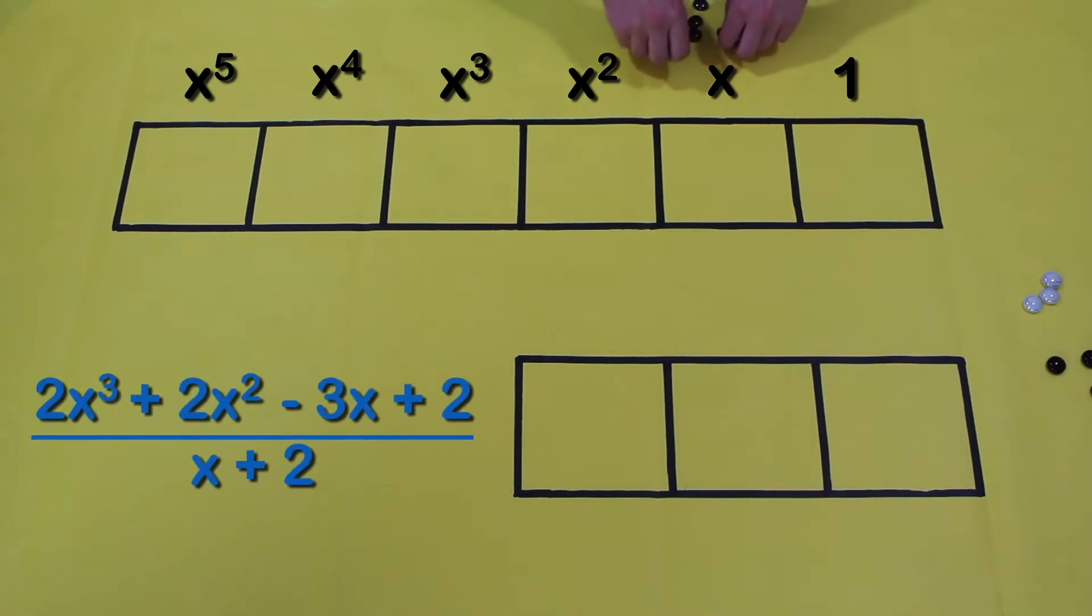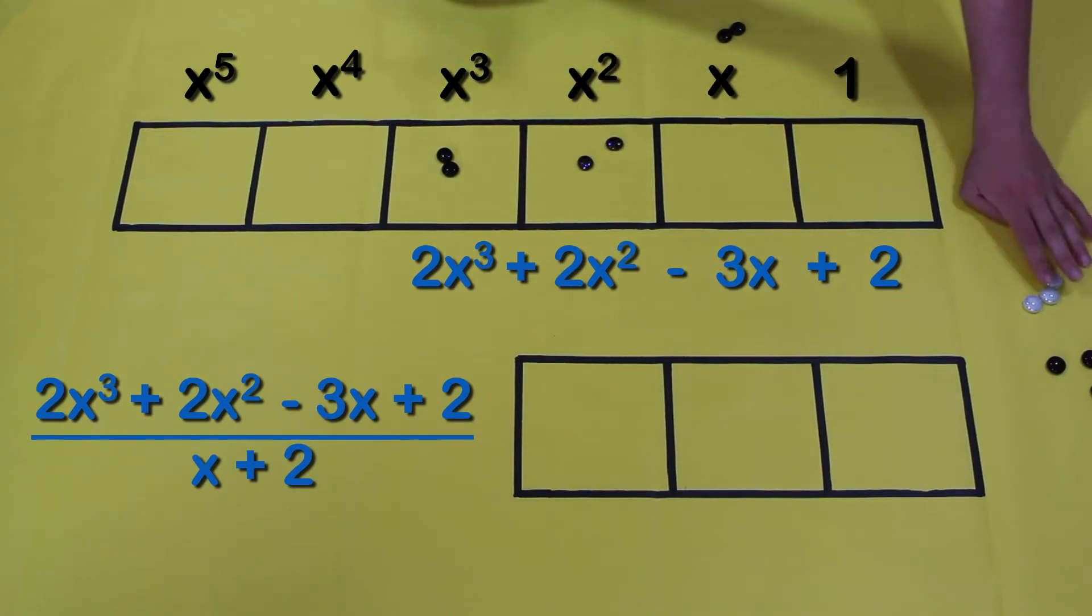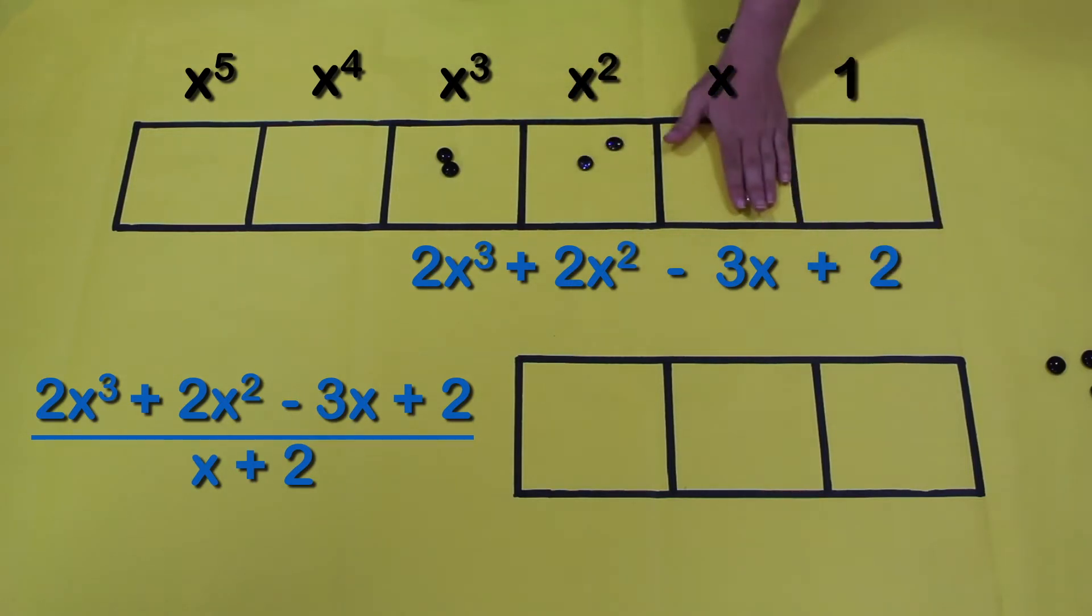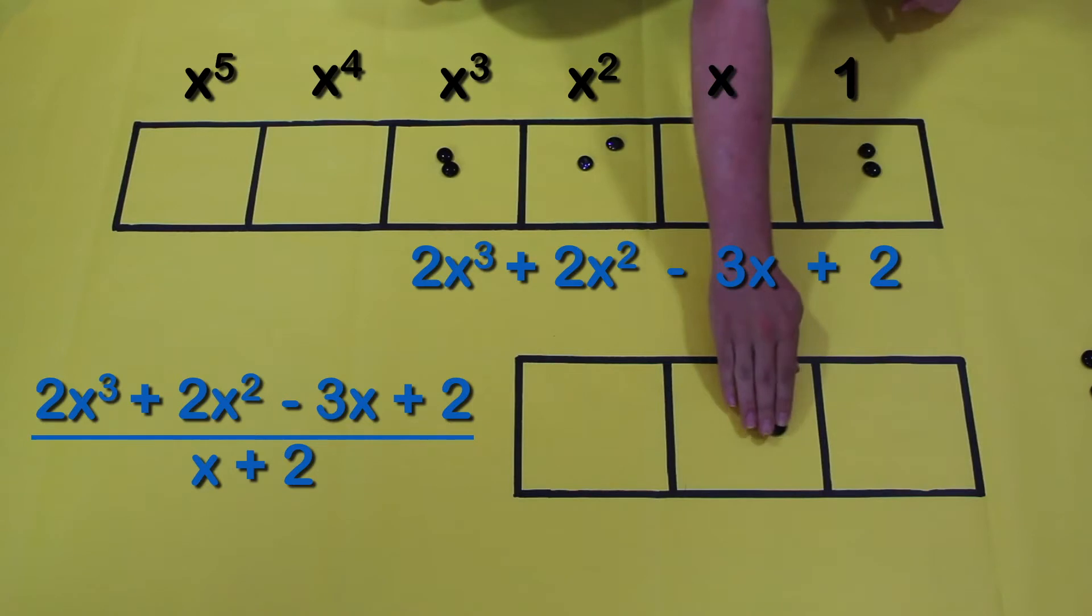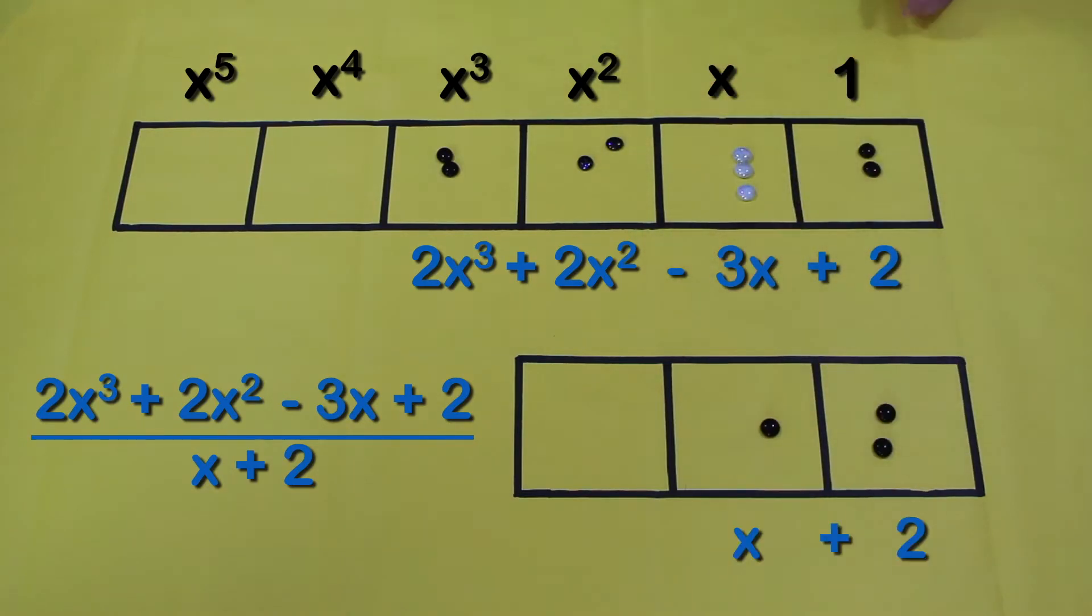First problem of the day: we got 2x³ + 2x² - 3x + 2 and we're gonna divide that by x + 2. Just like we did last time, you'll look for the pattern in the bottom and the top and then you switch it out.